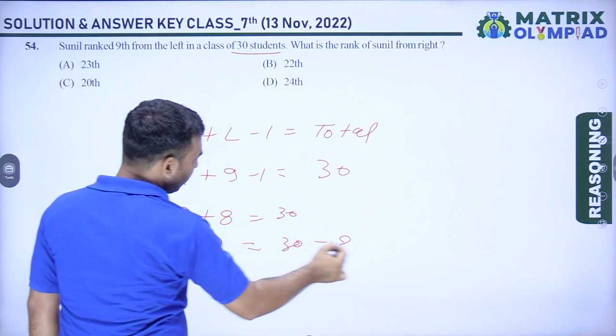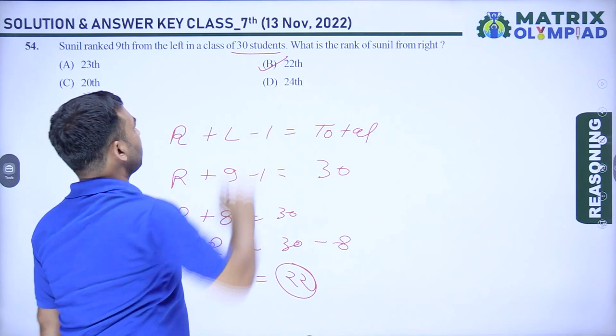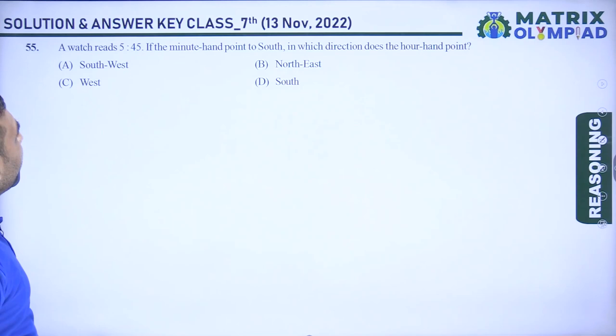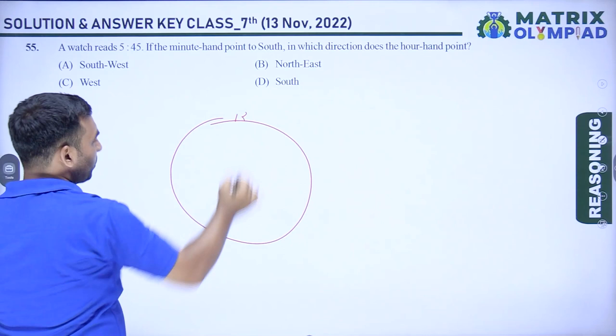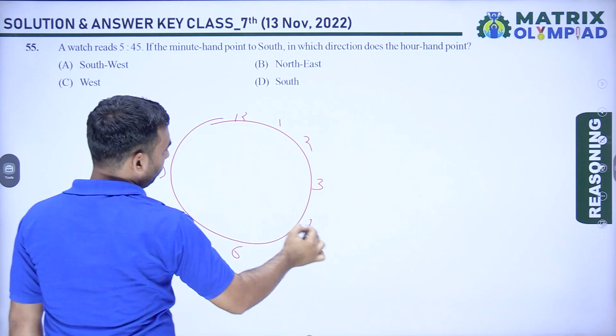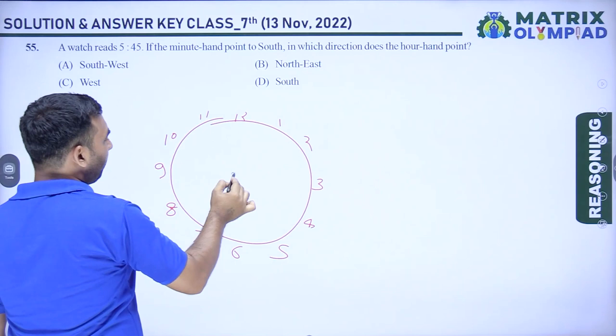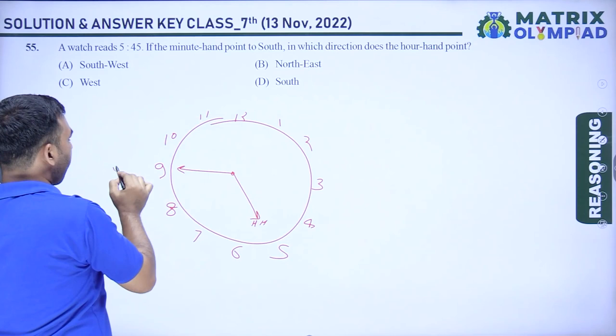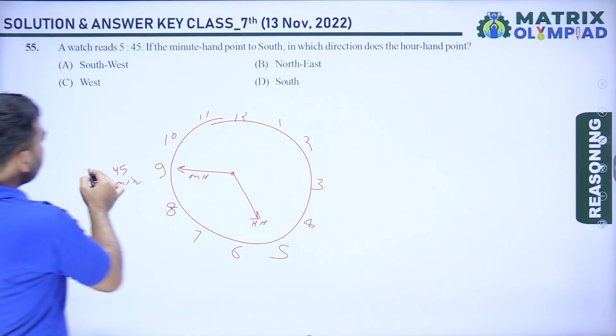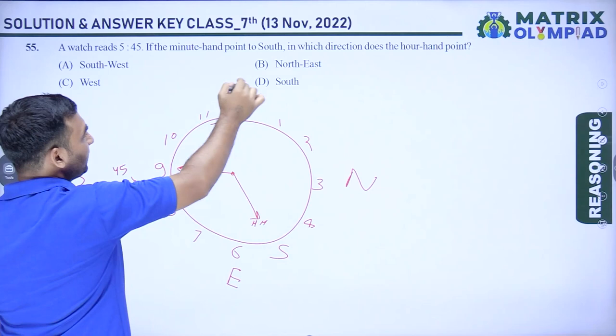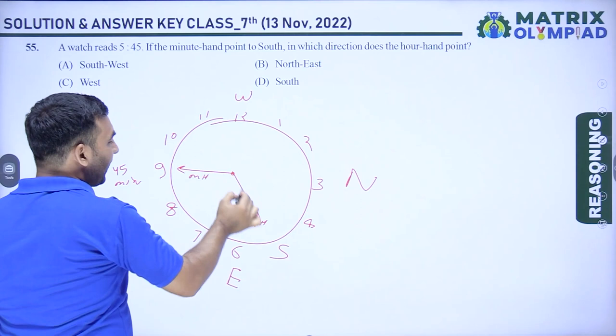Question 5: a clock reads 5:45 and the minute hand points south. Drawing the clock: at 5:45 the minute hand is at 9 (pointing west traditionally, but here pointing south). Mapping directions, the hour hand (between 5 and 6) points northeast. Option B — northeast — is correct.